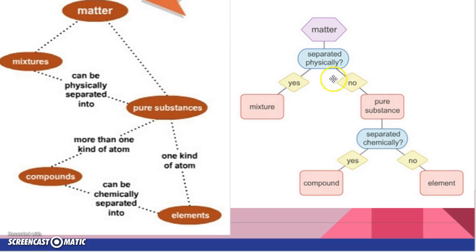So matter, separated physically, if you can separate it physically, yes, it's a mixture. If you can't, it's a pure substance. If we chemically separate it, yes, it's a compound. If you can't, no, it's an element.